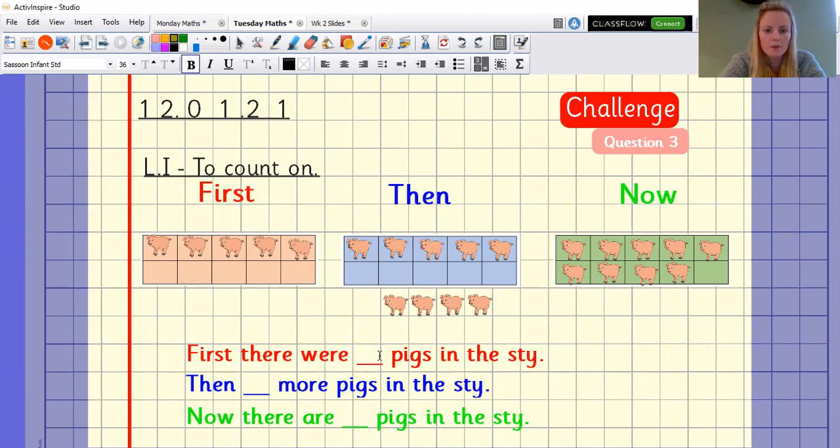So there were pigs in the stye. So there were five pigs in the stye. One, two, three, four more pigs in the stye.